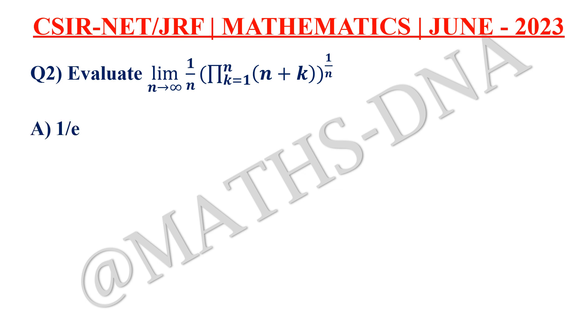And the options are: a, 1 by e, that e is an irrational number; b, 2 by e; c, 3 by e; and d, 4 by e.